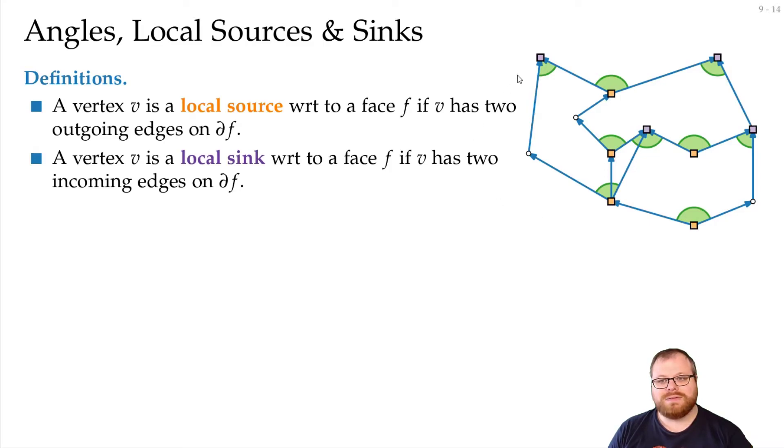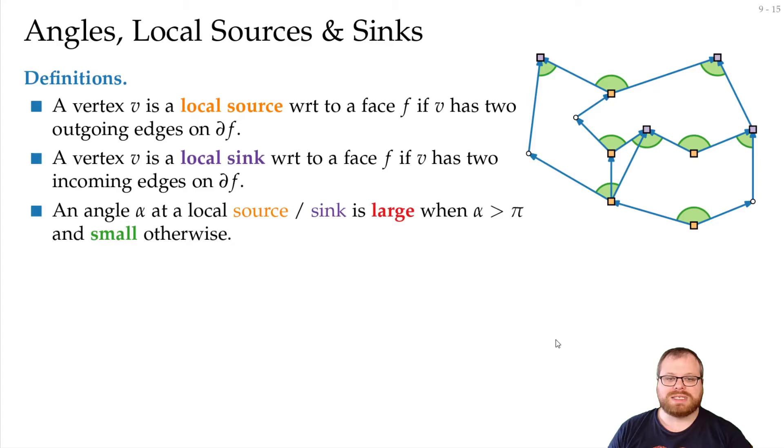Now you will see that I already drew some angles here. For every local source and every local sink, we want to have a look at how large this angle is. And we say that it's small if it's at most π or at most 180 degrees, and it's large if it's more than that.